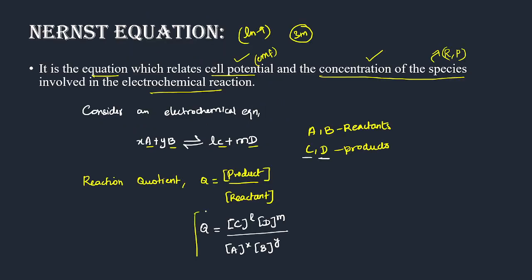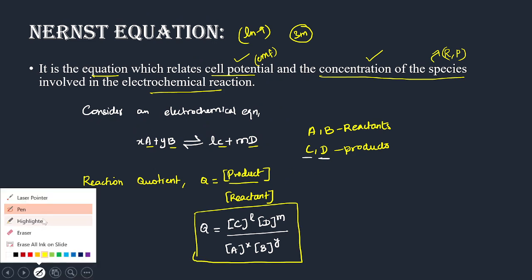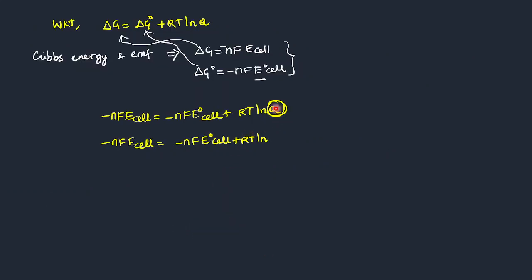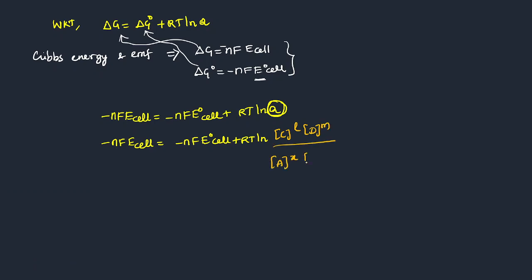We call Q the reaction quotient: Q = [C]^l · [D]^m divided by [A]^x · [B]^y. I am going to substitute Q here. So the full equation becomes: -nFE_cell = -nFE°_cell + RT·ln([C]^l[D]^m / [A]^x[B]^y).